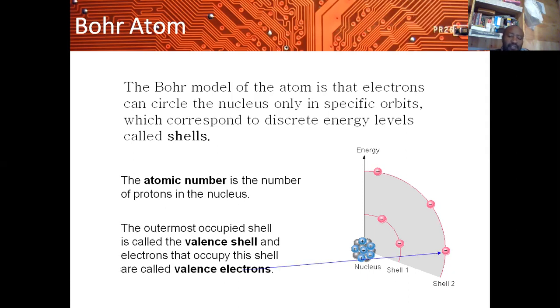Now electrons are arranged or move around the nucleus in a circular fashion. You have electrons which are in the inner shells or inner orbits, and you have electrons in the outer orbits. The outermost orbit is referred to as the valence shell, and the electrons in that shell are referred to as the valence electrons.